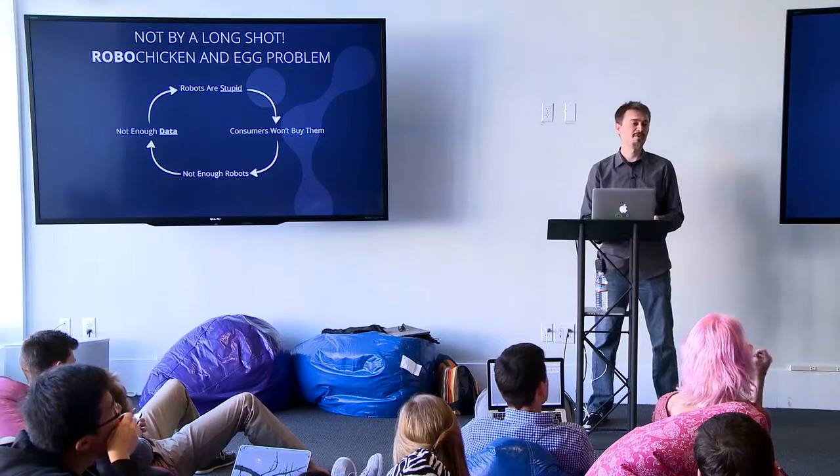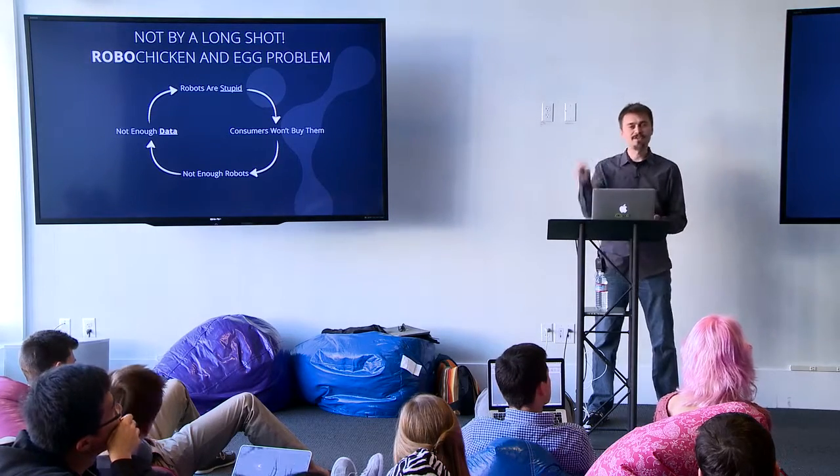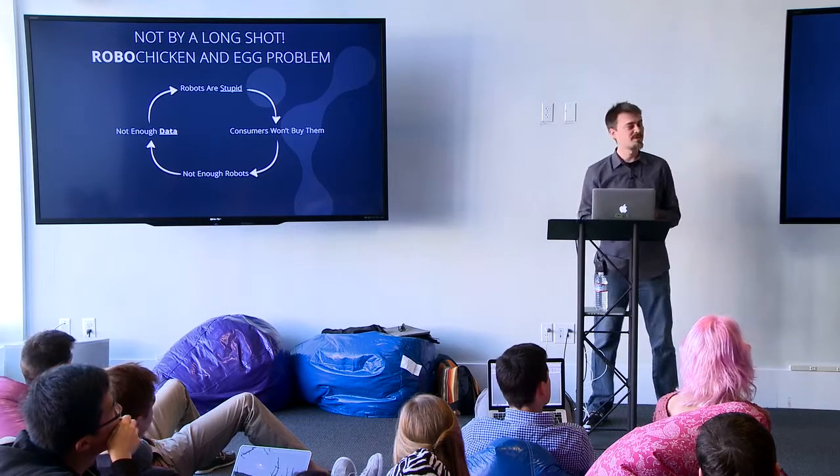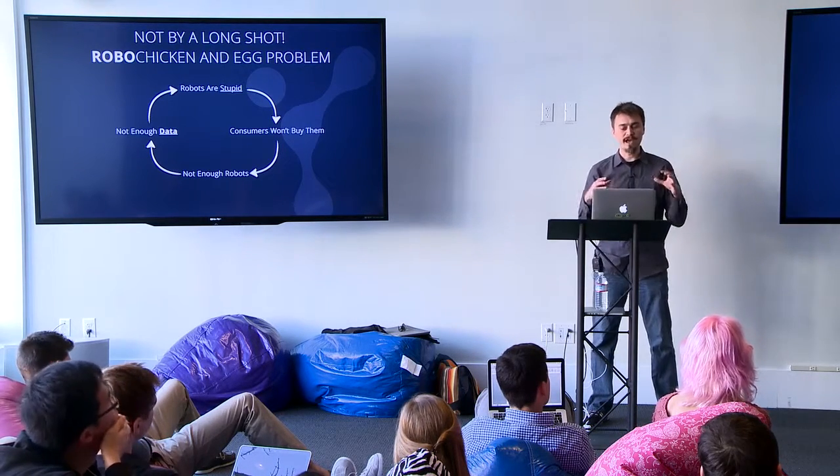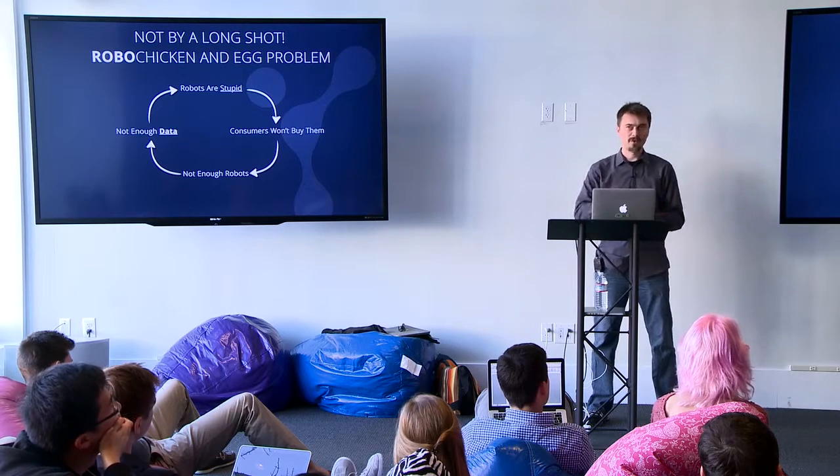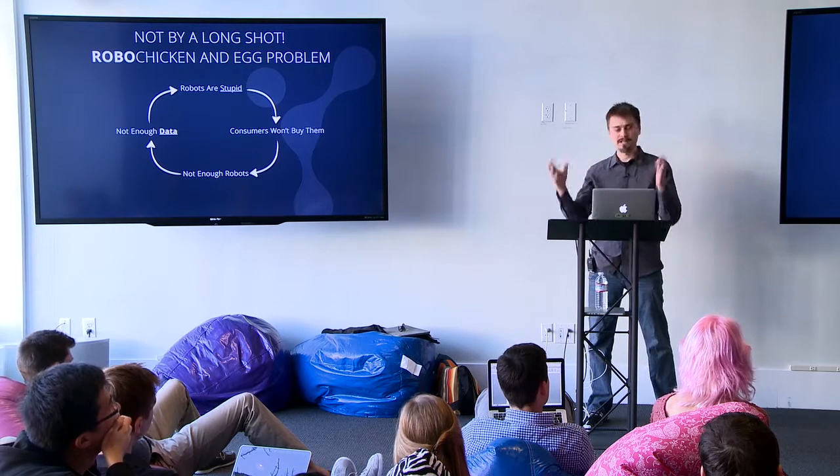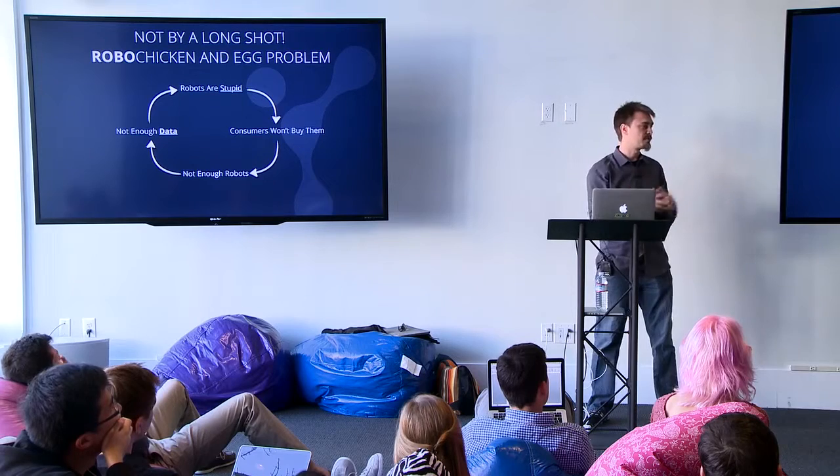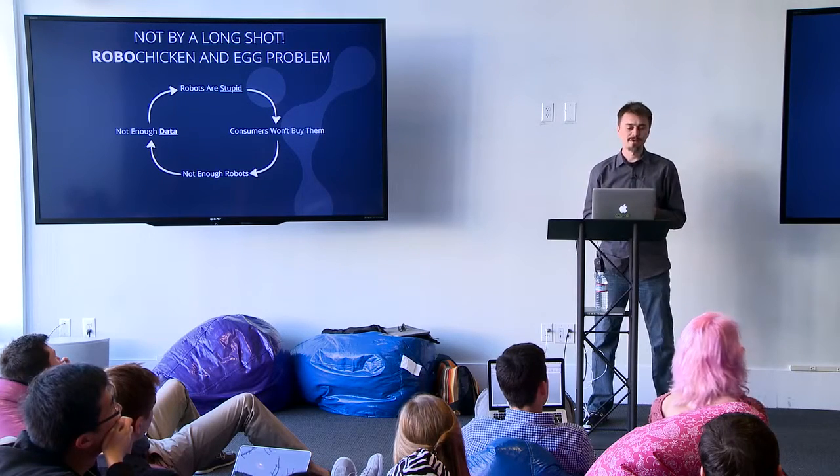So we think that robots are stupid right now. They're not doing anything interesting. You have to program them by hand, and it's quite tedious. So because they're stupid, consumers won't buy them. Why would I buy a robot that doesn't do anything for me? So therefore, we don't really have enough robots in the field, and we don't have enough data. So it's kind of this vicious circle, this robot chicken and egg problem, as we call it, that we just can't break. If we had a lot of really good data, we could train a lot of different classifiers and really complicated software that would probably make robots a bit more intelligent, but we don't, as you'll see.